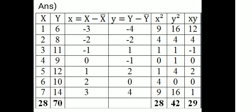Then we calculate small x and small y. Small x equals capital X minus x-bar (where x-bar = 4), giving values: 1-4=-3, 2-4=-2, 3-4=-1, 4-4=0, 5-4=1, 6-4=2, 7-4=3. Since y-bar is 10, small y equals Y minus 10, giving: -4, -2, 1, -1, 2, 0, 4.